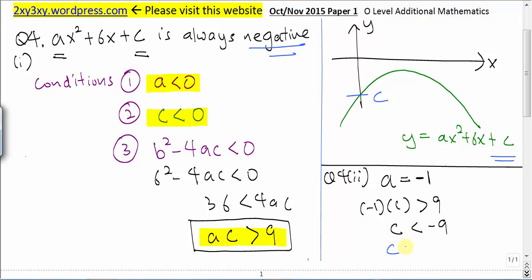So a possible value of c is c can be equal to negative 10, negative 10 is less than negative 9. Therefore, these are two possible values of a and c that fulfill this statement.